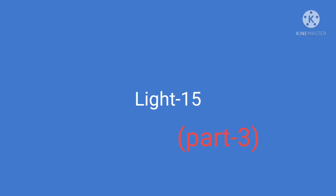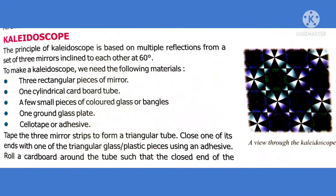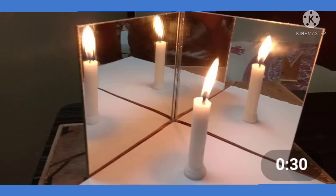Let's move on to chapter 15, part 3, on pages 209, 210 and 211. In the previous session, we completed the topic on formation of multiple images. Multiple images of an object are formed when two mirrors are placed inclined to each other at any angle. The same principle is applied in making a kaleidoscope.